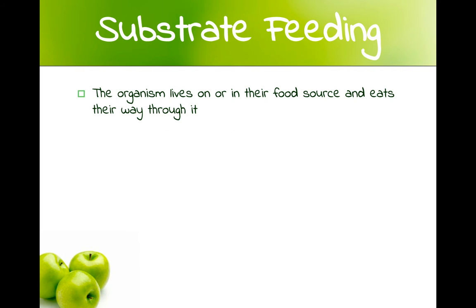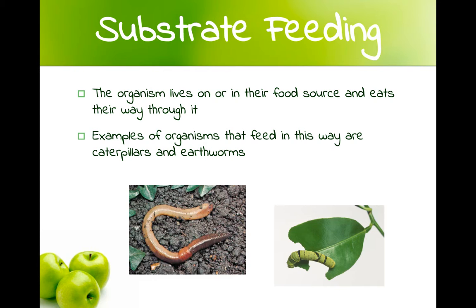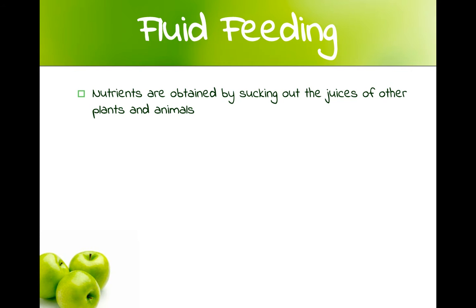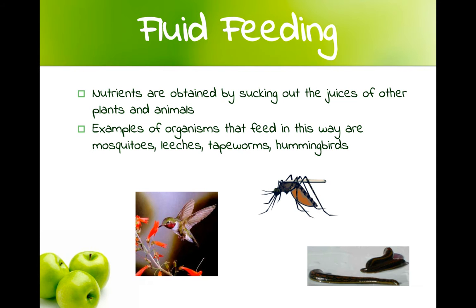The next type is substrate feeding, where the organism lives on or right in their food source and eats their way through it. Examples are caterpillars and earthworms. The next method is fluid feeding, where nutrients are obtained by sucking out the juices of other plants and animals. Examples of organisms that feed this way are mosquitoes, leeches, tapeworms, and hummingbirds.